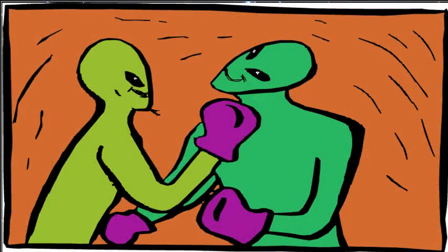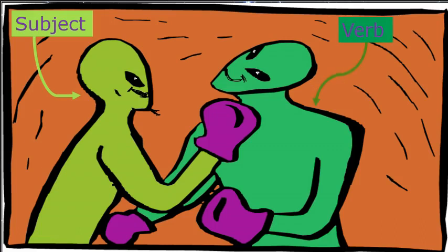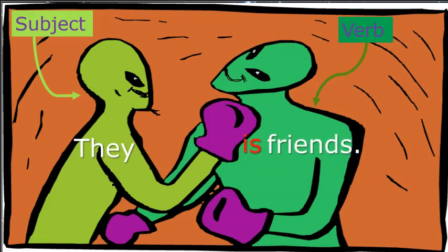But what happens when the subject and verb in a sentence disagree? Just like our aliens here are disagreeing playfully. Our subject is 'they' and the verb is 'is' — 'They is friends.' That doesn't sound right, because 'they' is a plural word and it does not go with the singular 'is'. So let's correct this so our aliens can shake hands. The subject now agrees with the verb — plural subject and plural verb — so they're friends now.